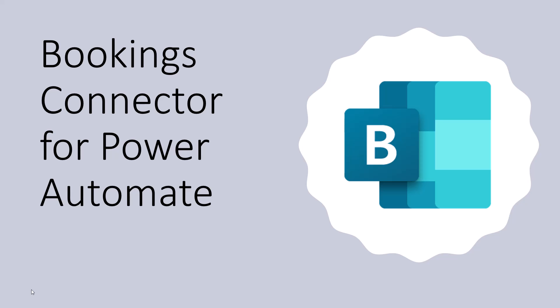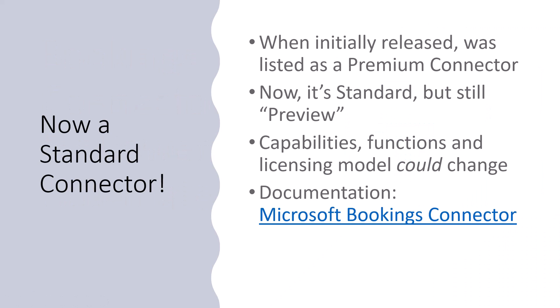Now that we have an official connector, we can do those kinds of things. When the connector first came out — probably about two or three months ago — it was listed as a premium connector, meaning it would only be available to folks with a per-app or per-flow license in Power Automate, or a higher-level license. Now that it is standard, it's available to more people. Most people I talk to have the seeded Power Automate license, which is part of a Microsoft enterprise license — an E3 or E5 — from an enterprise organization or academic institution with standard Microsoft licensing.